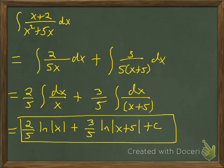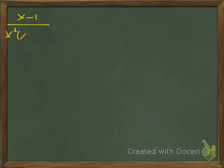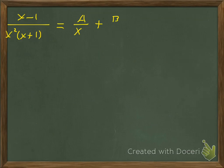We're going to do another example of partial fraction decomposition where a linear term appears twice. This time we have (x−1) over x²(x+1). Our factors are x and x+1, both linear. Since x appears squared, we'll need A over x, plus B over x², plus C over (x+1).